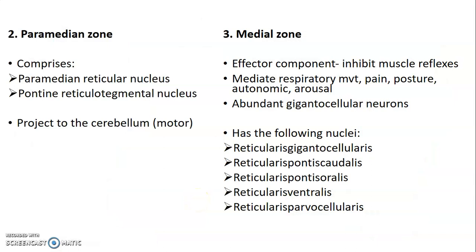The paramedian zone comprises the paramedian reticular nucleus and the pontine reticulotegmental nucleus, which project to the cerebellum and subserve motor function. The medial zone has effector components which inhibit muscle reflexes and mediate respiratory movement, pain, posture, autonomic function, and arousal.